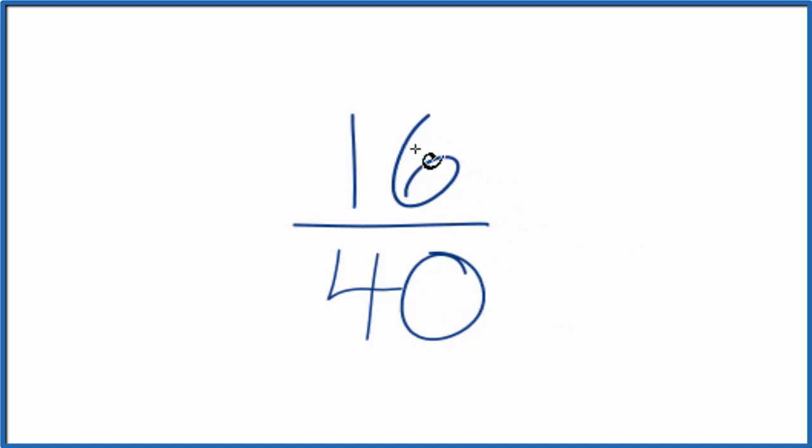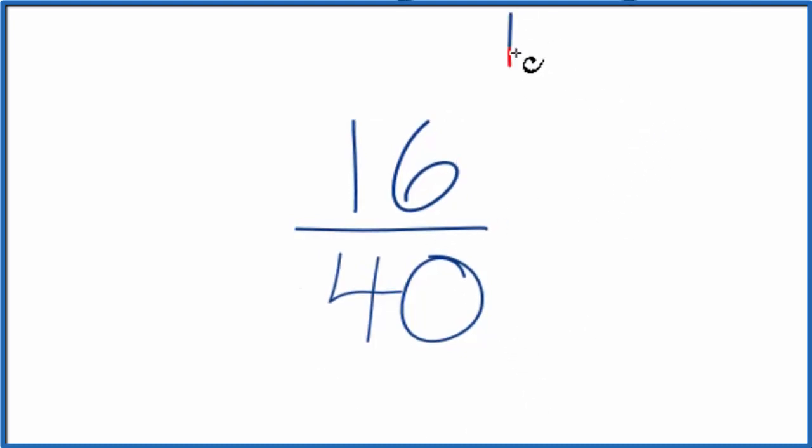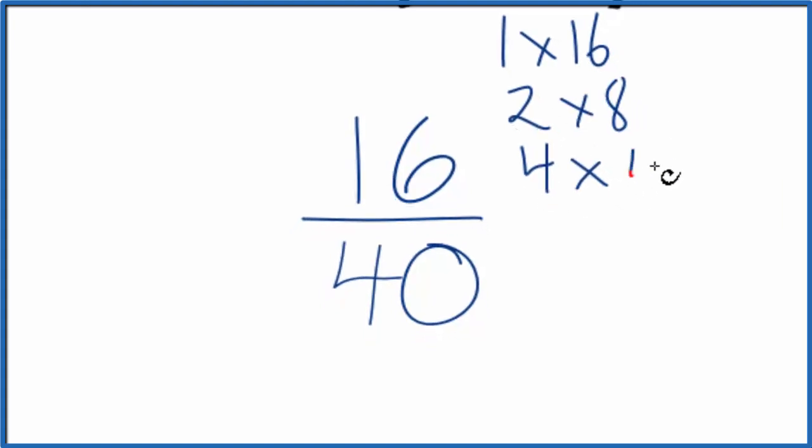So we could list the factors for 16 and 40 and find the largest common multiple. 1 times 16, 2 times 8, 4 times 4.